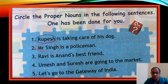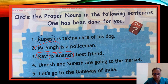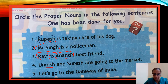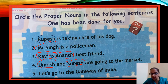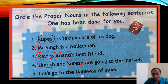Third sentence: 'Ravi is Anand's best friend.' Ravi is someone's name and Anand is also someone's name, so we will circle both Ravi and Anand. Fourth sentence: 'Mesh and Suresh are going to the market.' Mesh is a particular name, Suresh is a particular name — both are proper nouns. Market has no specific name, so it is a common noun. Fifth: 'Let's go to the Gateway of India.' A specific place name is given — Gateway of India — there is only one, so we will circle it as a proper noun.